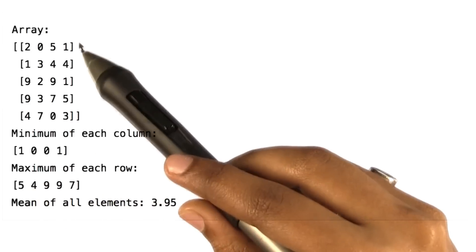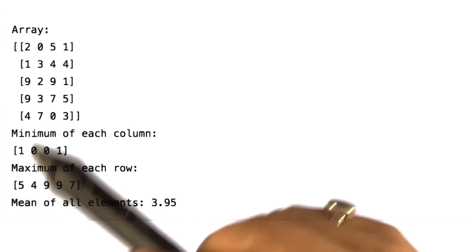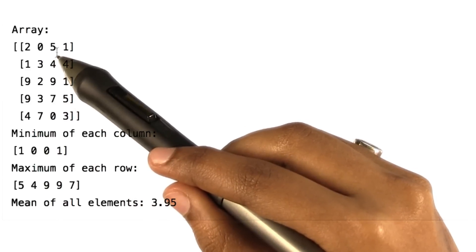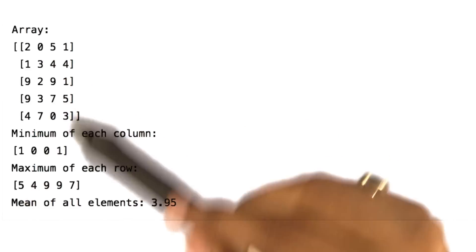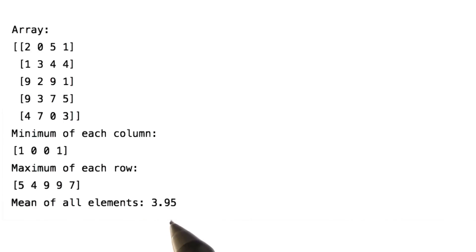Similarly, for maximum of each row, you can observe that for the first row, the maximum is five and it is shown here. The mean of all the elements is 3.95, which is calculated using the mean function.